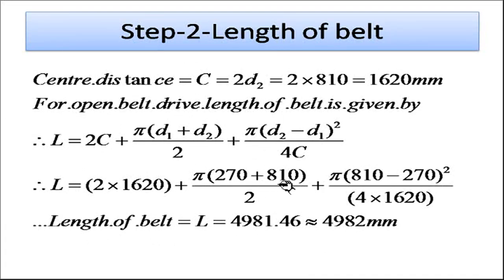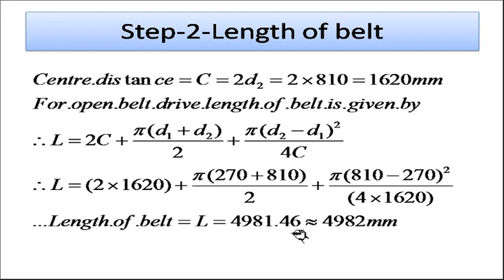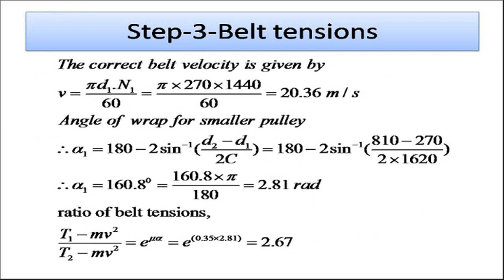Using d1 = 270 mm, d2 = 810 mm, and C = 1620 mm in the belt length formula, we get the total length of belt required as 4981.46 mm, which rounds up to 4982 mm. Now we need to find the tensions in the belt.